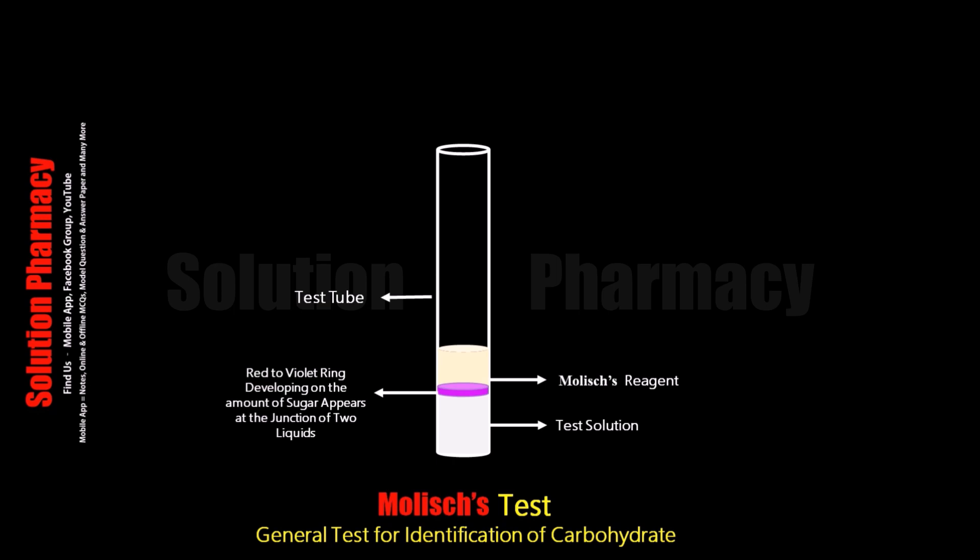Now let's know the principle of the Molisch test. Molisch test is used to identify almost all types of carbohydrates except tetroses and trioses. Carbohydrates in free or combined form, or any form, if present in the sample, can be easily identified by performing the Molisch test. That's why this test is used routinely to detect carbohydrates.